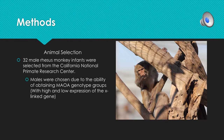The animals selected for this study consisted of 32 male rhesus monkey infants, and they all came from the California National Primate Research Center. Males were chosen over females due to the ability to obtain the MAOA genotype group from males more easily than from females, as it is more prevalent.